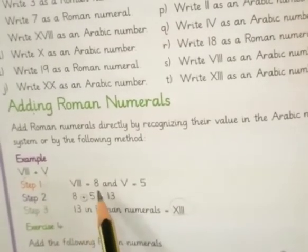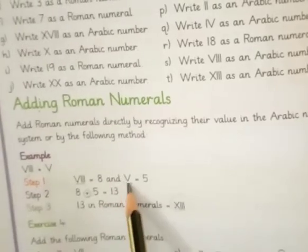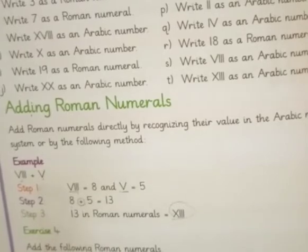As you can see, these are the values of Roman numerals. VIII is eight, V is five. These are your Roman numerals. Today we are going to learn how to add Roman numerals.